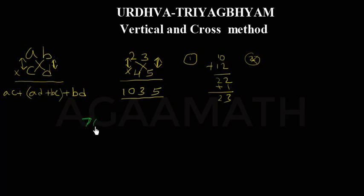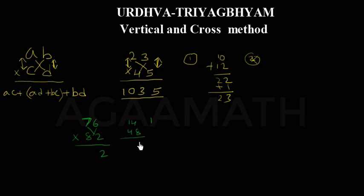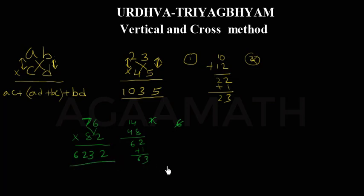Let us take another example: 76 into 82. First, 6 into 2 is 12, write 2 and carry 1. Now cross: 7 into 2 is 14, and 8 into 6 is 48, total 62, plus carried 1 is 63. Write 3 and carry 6. Then vertical: 7 into 8 is 56, plus 6 carried is 62. So the result is 6232.